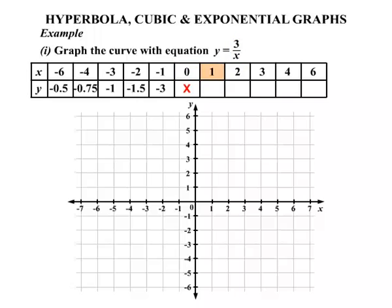So moving on now. When x is 1, 3 divided by 1 is 3. When x is 2, 3 divided by 2 is 1.5. When x is 3, 3 divided by 3 is 1. When x is 4, 3 divided by 4 is 0.75. And finally then, when x is 6, 3 divided by 6 is 0.5. So we've completed that table as is.